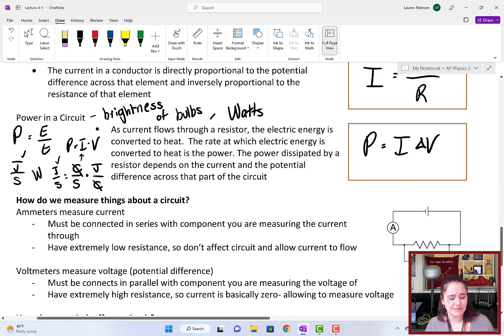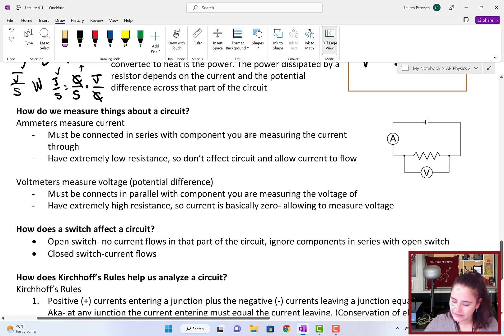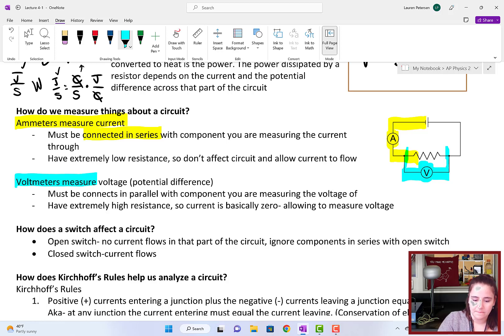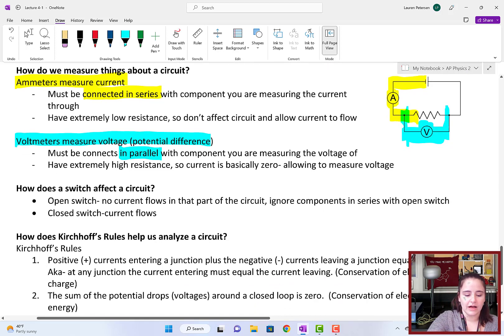In all of our circuit labs, we will be using ammeters and voltmeters. An ammeter, this A right here is its symbol when we do circuit diagrams, ammeters measure current, and they must be connected in series with whatever you're measuring, meaning it has to be along the same path. Typically, these are modeled in an ideal situation of having zero resistance, like a wire, so they don't affect the current and allow circuit to flow.